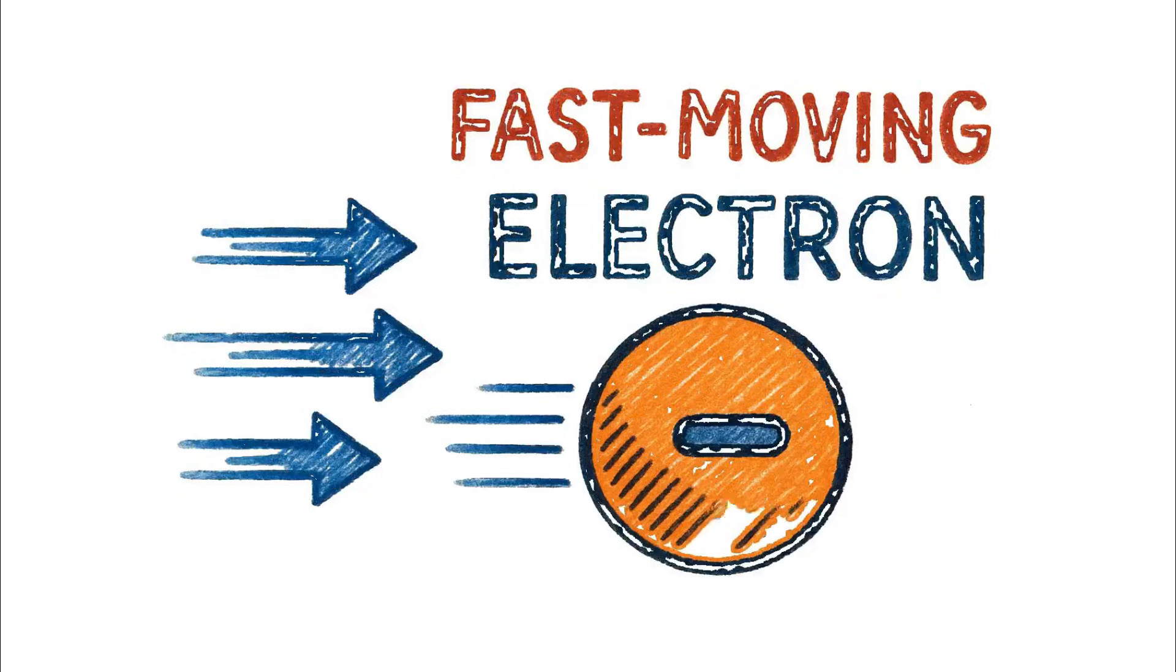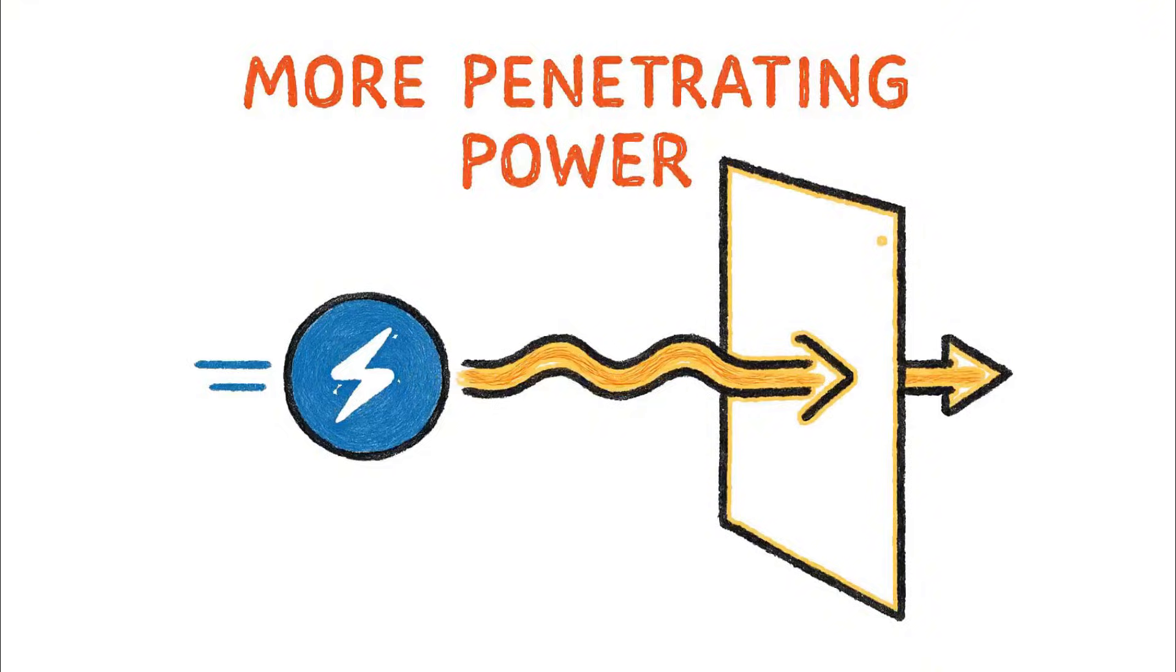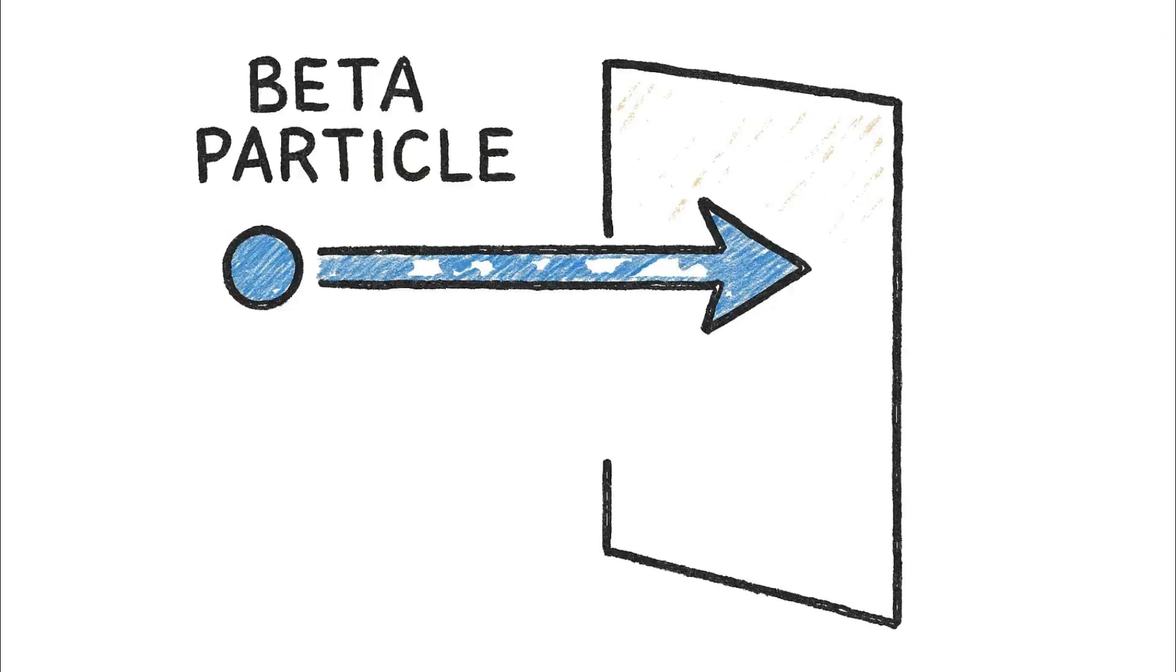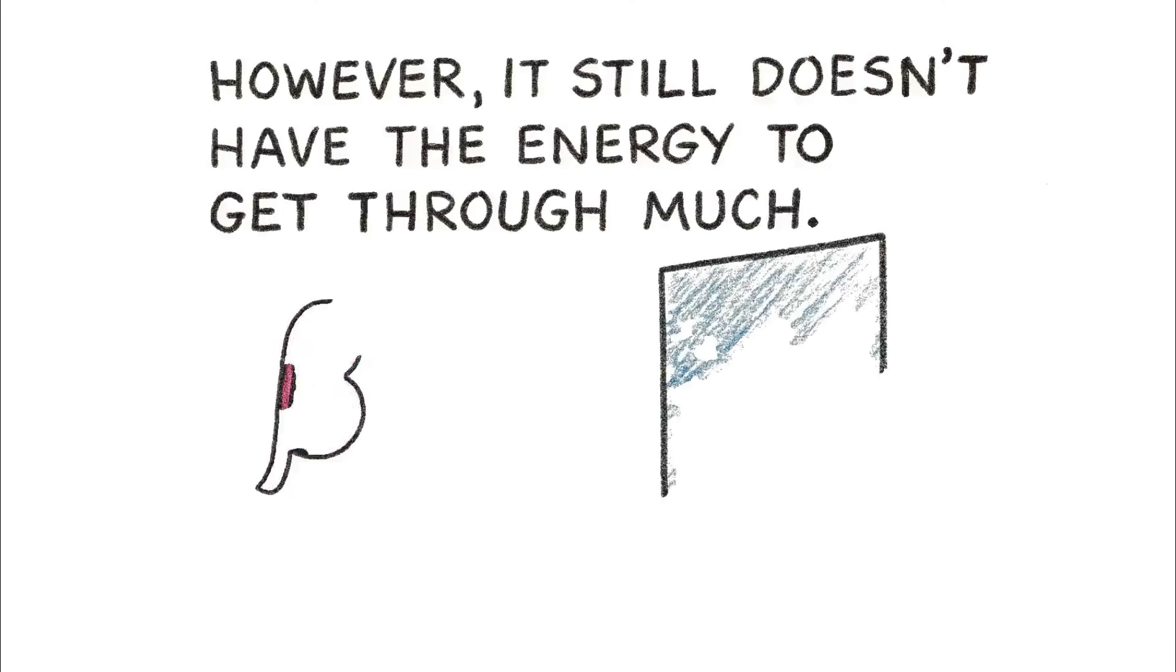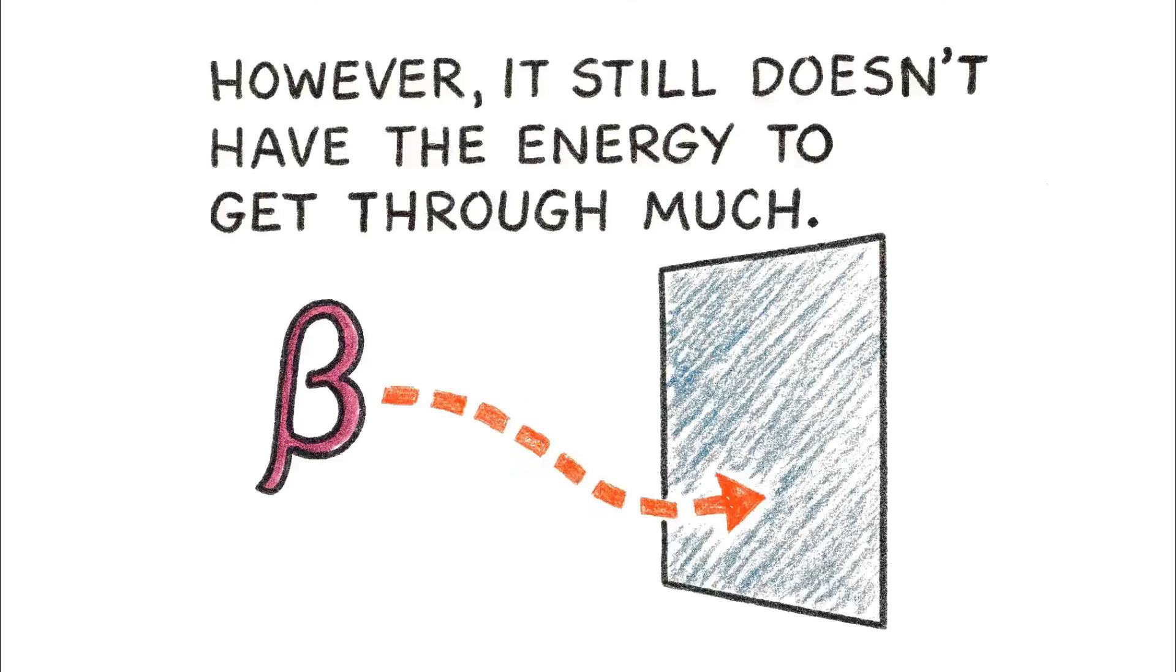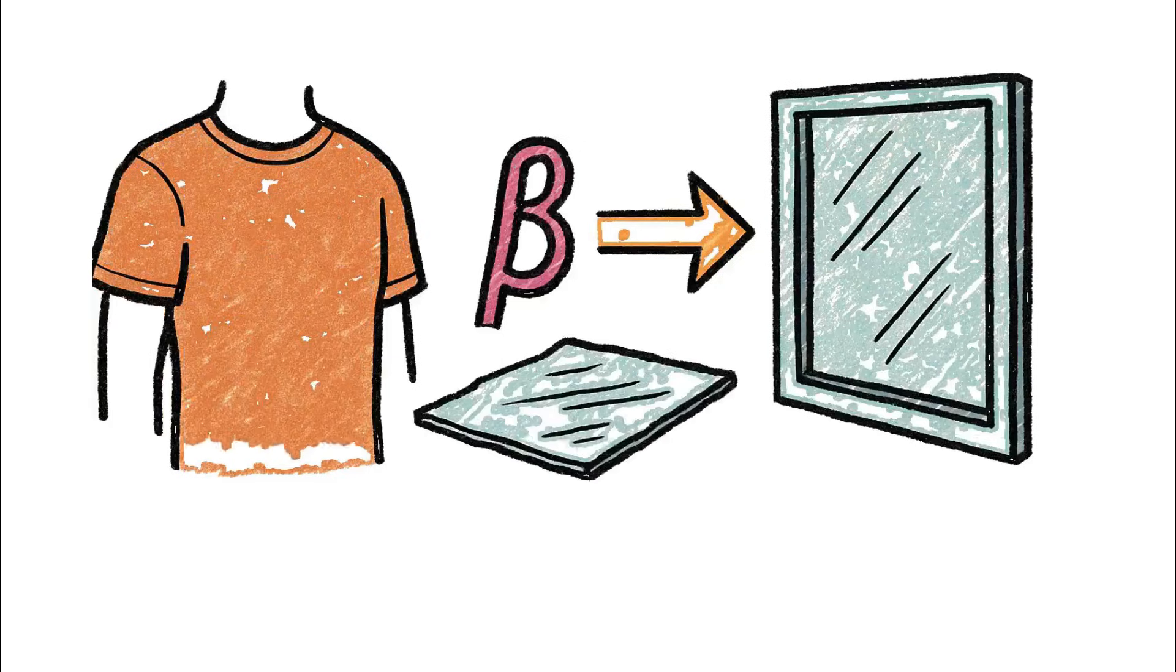And they travel significantly faster. This speed gives them more penetrating power. A beta particle will zip right through that sheet of paper that stopped the alpha particle. However, it still doesn't have the energy to get through much. A layer of your clothing, a thin sheet of aluminum foil, or a pane of glass will stop it.